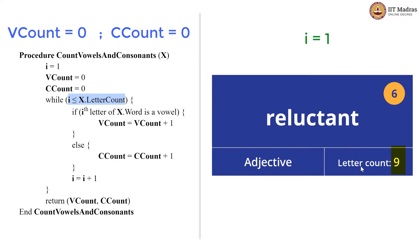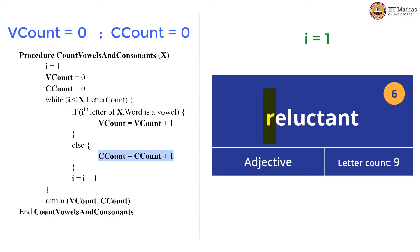i has been declared to be 1 and the letter count is 9, so 1 is less than 9. Therefore, we go inside the while loop. We have an if statement checking if the ith letter of x dot word is a vowel. Here i is 1, so 'r' is the first letter and it is not a vowel. We go to the else block and increment c_count to 1, then increment i to 2.